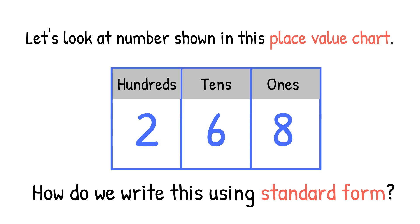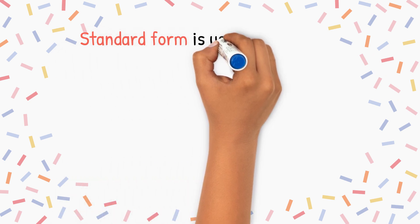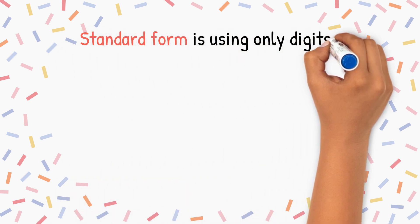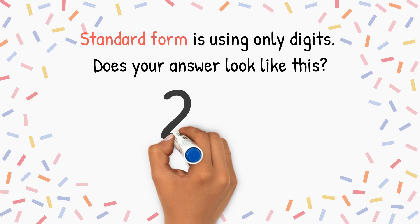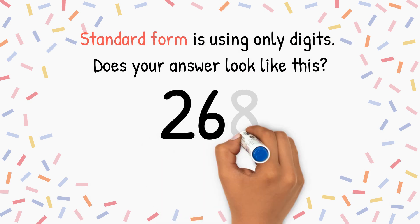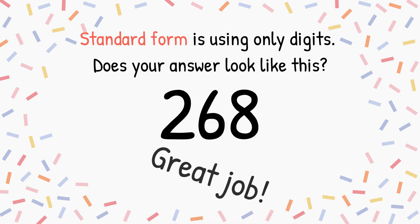Let's look at the numbers shown in this place value chart: 2 hundreds, 6 tens, 8 ones. How do we write this using standard form? Standard form is using only digits. Does your answer look like this? 268. Great job!